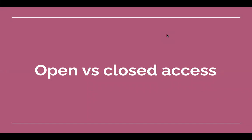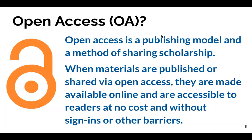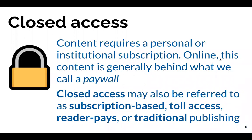Let's talk about open versus closed access. Open access, or OA, is both a publishing model and a method for sharing published scholarship. When materials are published or shared through open access, they're made available online and accessible to all readers at no cost, without sign-ins or other barriers. Closed access, on the other hand, is a model that's been around a lot longer and predates online access. In this model, content requires a personal or institutional subscription. Online, this content is generally behind what we call a paywall. In print, this is something that an individual, institution, or library would pay to subscribe to, like a journal.